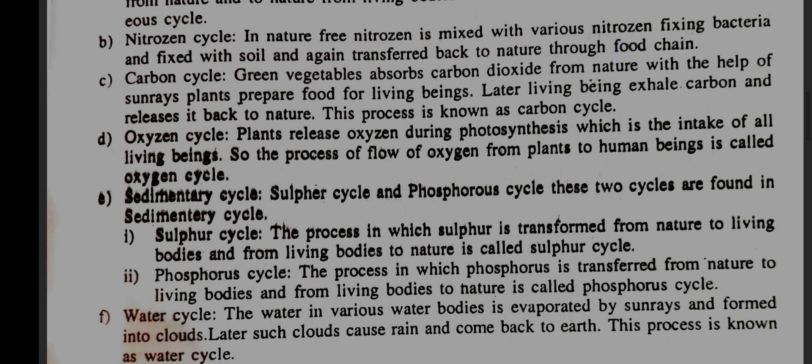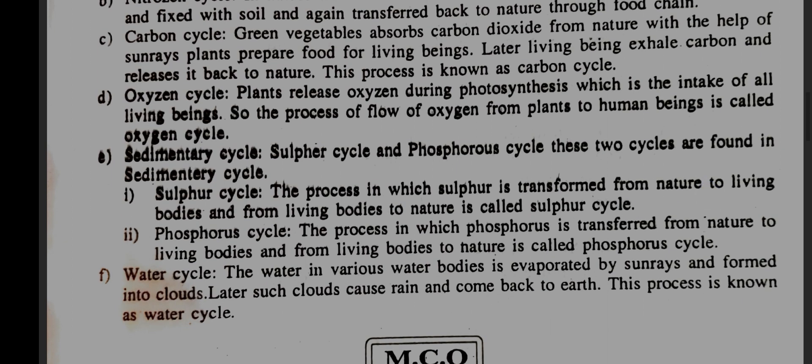Carbon cycle: green plants absorb carbon dioxide from nature and with the help of sunlight prepare food for living beings. When a living being exhales carbon, it releases it back to nature — this process is known as the carbon cycle. Oxygen cycle: plants release oxygen during photosynthesis, which is the intake of all living beings, so the flow of oxygen from plants to living beings is the oxygen cycle. Sedimentary cycle includes the sulfur cycle and phosphorus cycle.